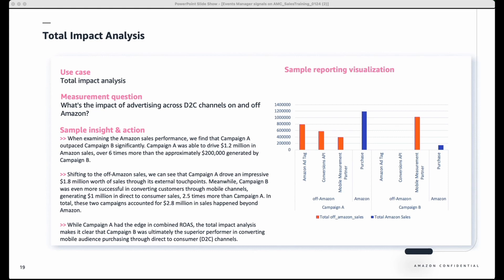When examining the Amazon sales performance, we find that campaign A outpaced campaign B significantly. Campaign A was able to drive $1.2 million in Amazon sales, over six times more than approximately $200,000 generated by campaign B. Shifting to the off-Amazon sales, we can see that campaign A drove an impressive $1.8 million worth of sales through non-Amazon channels. Meanwhile, campaign B was even more successful in converting customers through mobile channels, generating $1 million in non-Amazon sales — 2.5 times more than campaign A. In total, these two campaigns accounted for $2.8 million in sales beyond Amazon. While campaign A has the edge in combined sales, the total impact analysis made it clear that campaign B was ultimately the superior performer in converting mobile audiences through direct-to-consumer channels.